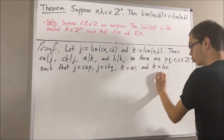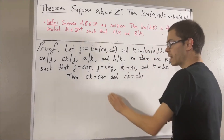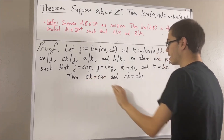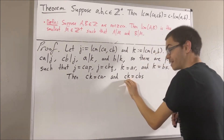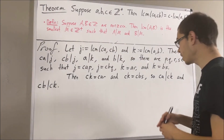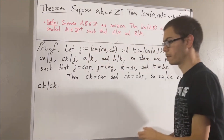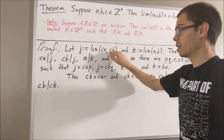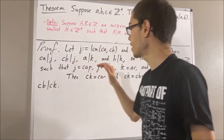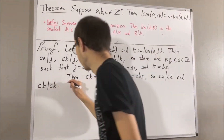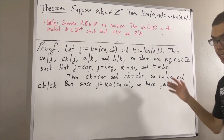Now let's take the last two equations and multiply c on both sides of them. We see that ca times an integer gives us ck, and cb times an integer gives us ck. That tells us that ca divides ck and cb divides ck. So ck is a positive integer such that ca divides ck and cb divides ck. But j is the least common multiple of ca and cb, meaning j is the smallest positive integer with those divisibility properties. So that tells us that j must be less than or equal to ck.